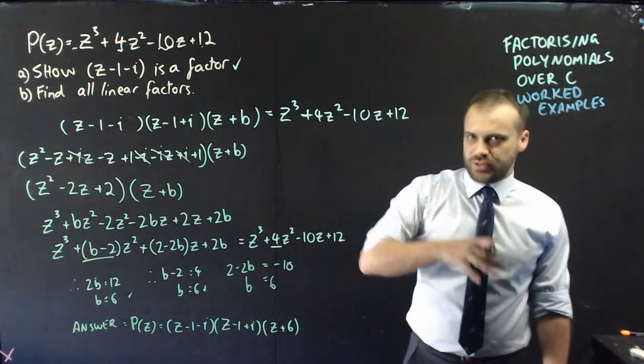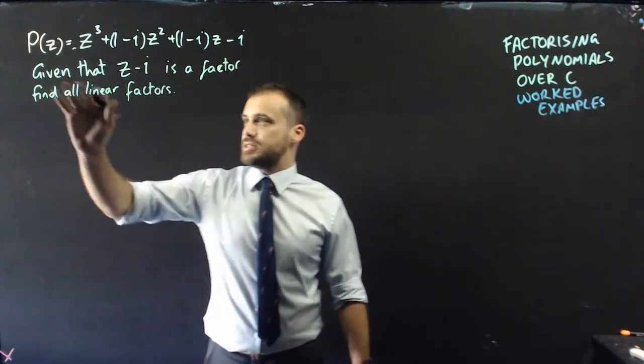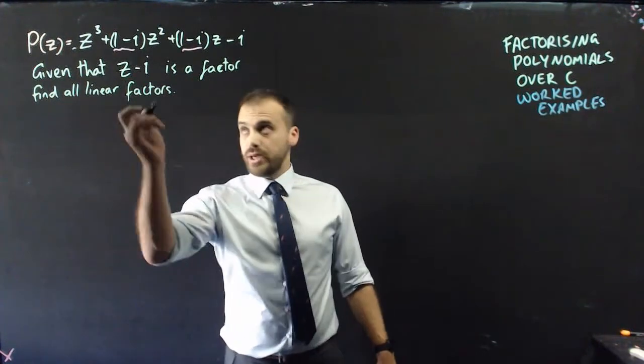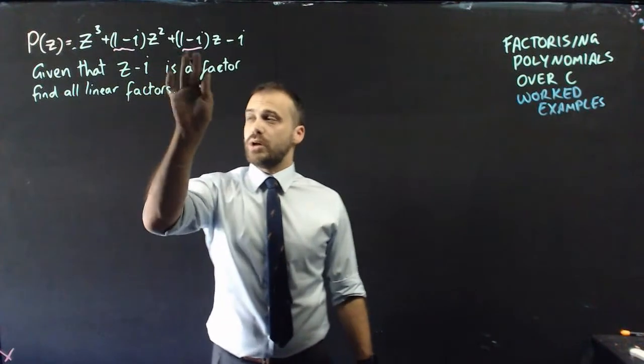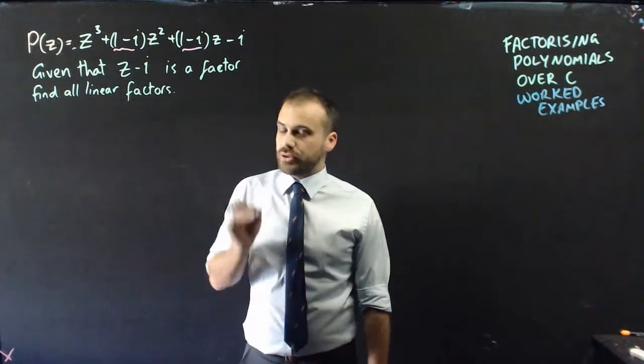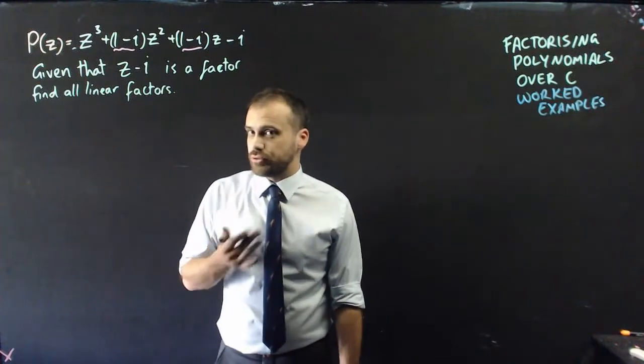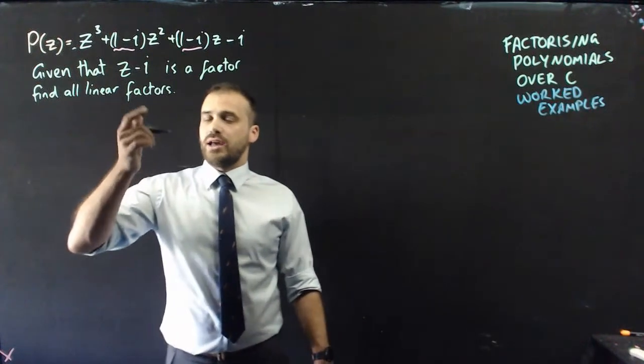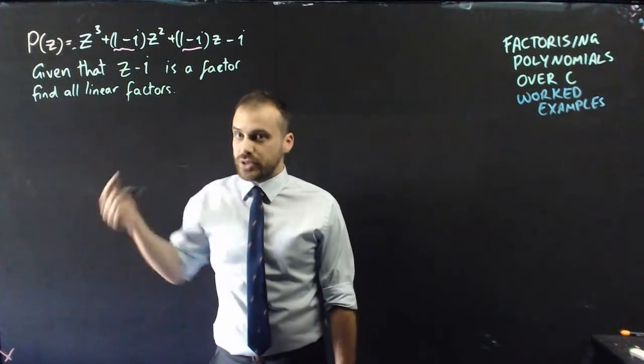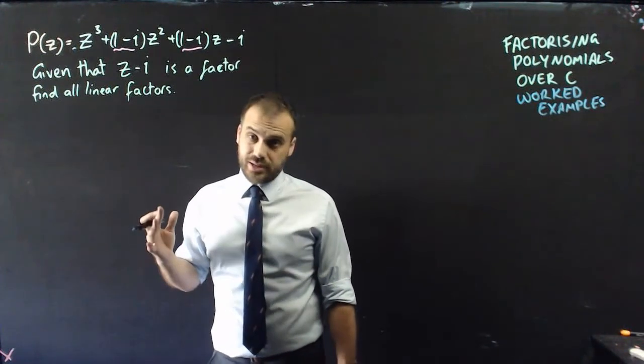This one's going to have something different in it. So, here's our second example. We've got this new polynomial here, and it says, given that z minus i is a factor, find all linear factors. Now, the really weird thing here is the underlined bits, 1 minus i and 1 minus i, here and here. Because they're not purely real coefficients, we can't use the conjugate root theorem here.